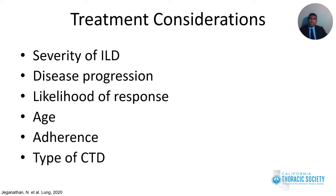Treatment considerations: patients with extensive ILD as well as those demonstrating progression based on pulmonary function tests should be considered for treatment as they are likely to have worse survival. Likelihood of response should also be considered — those with a UIP pattern are less likely to respond to immunosuppressives compared to those with NSIP or organizing pneumonia pattern. Age and other comorbidities should be taken into account since several medications are associated with significant side effects, and likelihood of adherence should also be considered since close monitoring of blood tests is required.